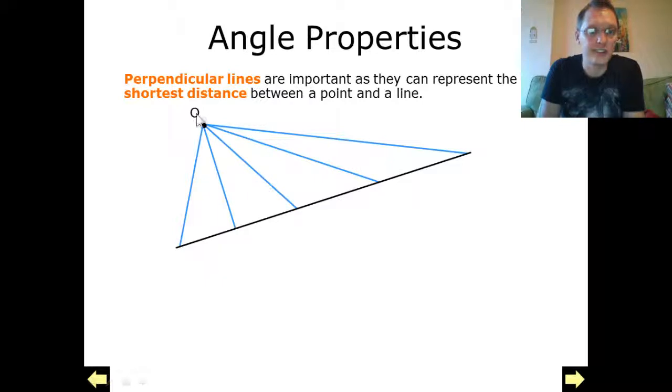And I'll just give you a little moment to try and decide which one of these would be the shortest distance. But if we take a look at this, it's actually this point, this red line just here. That's because it is a 90 degree angle and it's perpendicular. And this will be the shortest point.